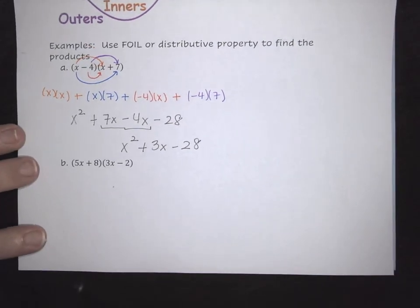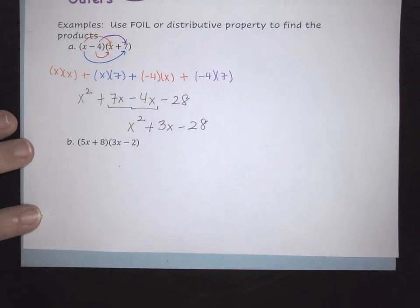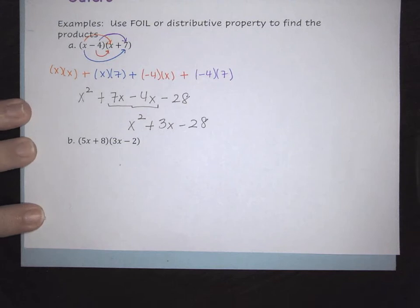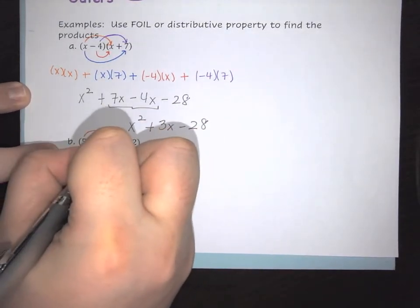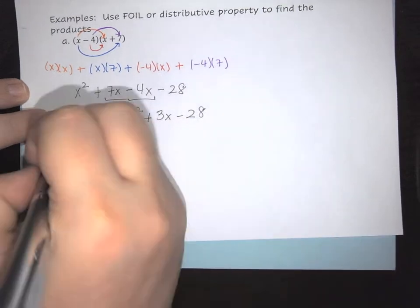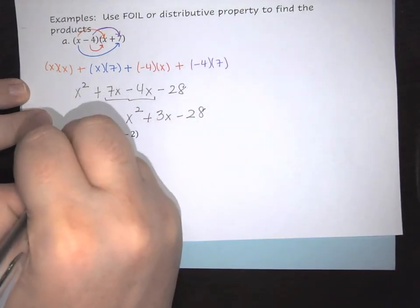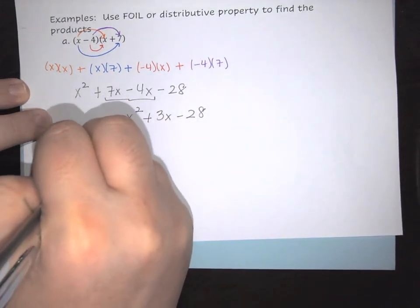Now in this next one, we're going to do the exact same thing that we just did. So again, we're going to start with your first. We're going to do the 5X times your 3X. Just like before, this is 5X times 3X.